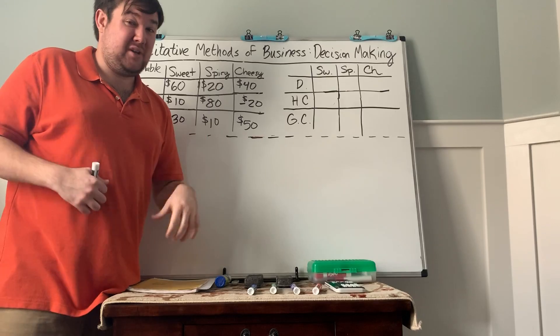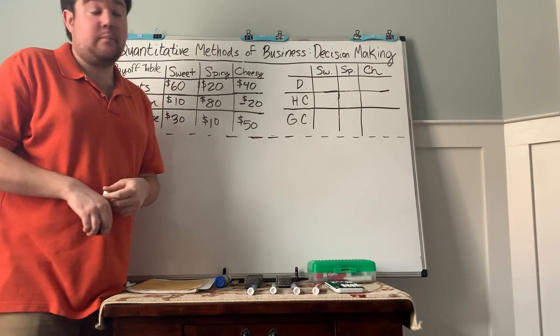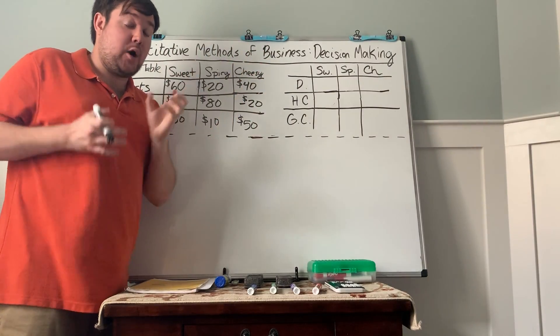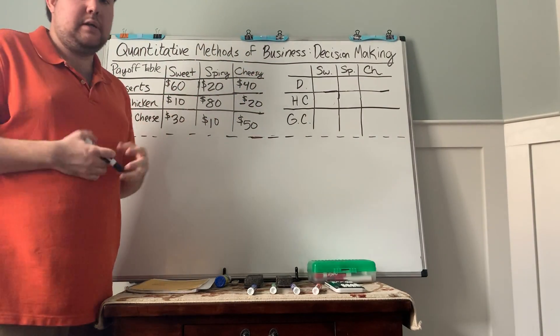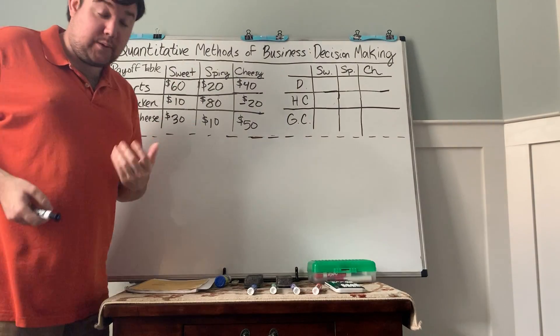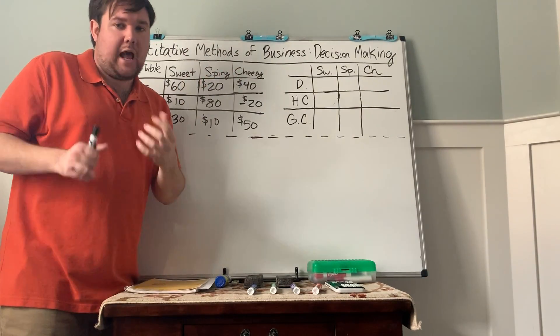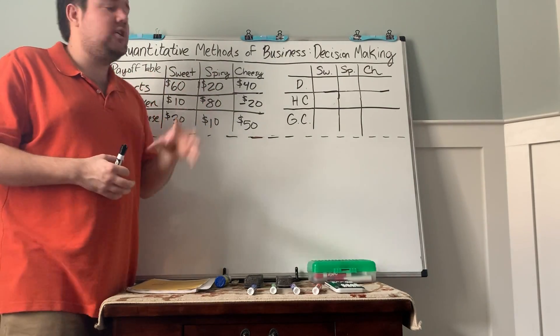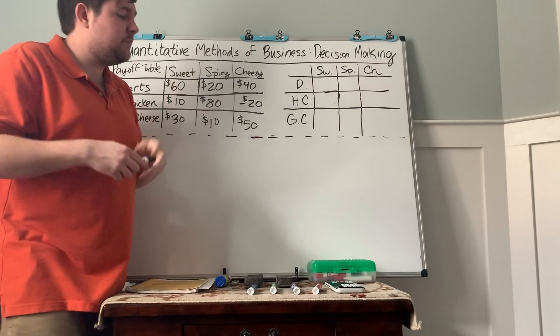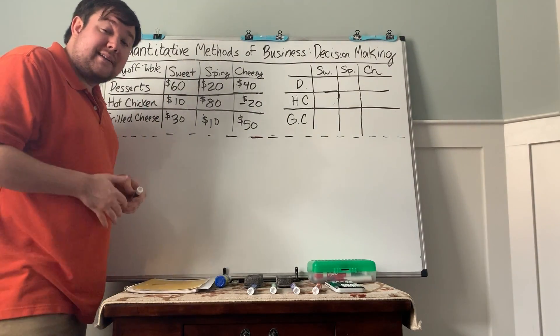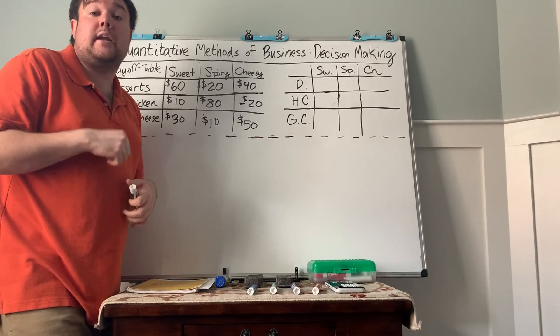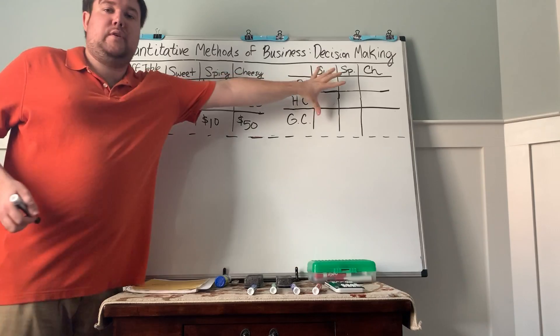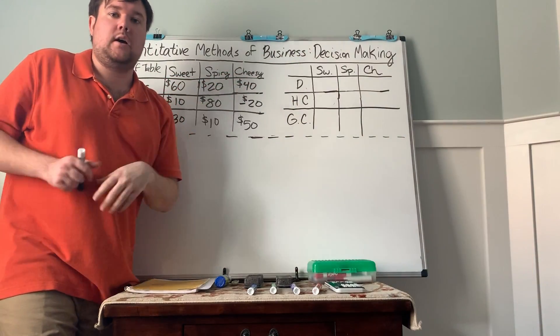Another issue we run across often is we don't know the likelihood that these states of nature are going to occur. We just know that they have a possibility of occurring. So in this video, we're going to see what happens when we don't know those probabilities. How are we supposed to use this information to make these decisions?